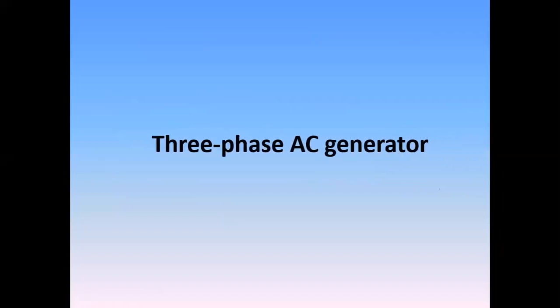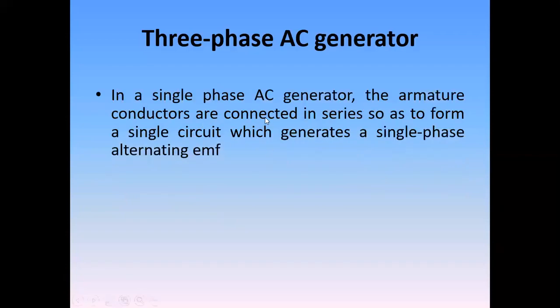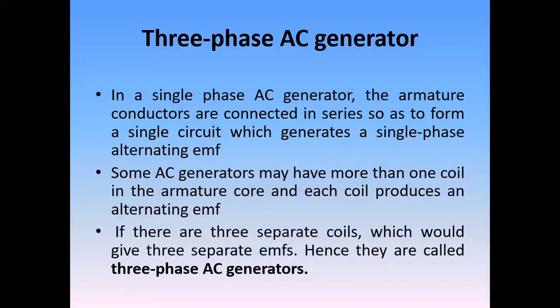In a single-phase AC generator, the armature conductors are connected in series to form a single circuit, and it produces a single-phase alternating EMF. In some AC generators, more than one armature coil is used, and each coil produces an alternating EMF. So if there are three coils and all three are producing separate EMFs, then we call it a three-phase AC generator.